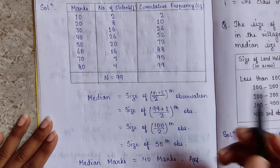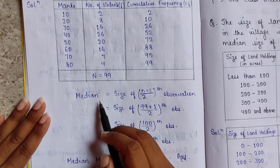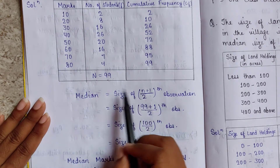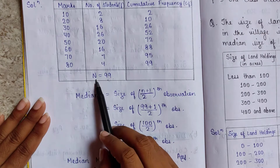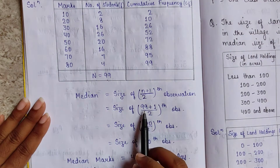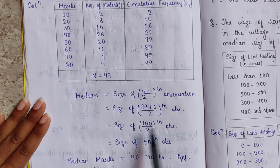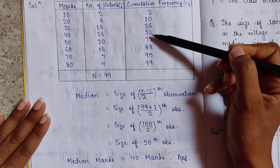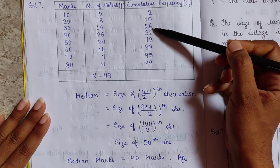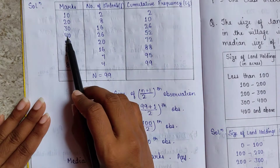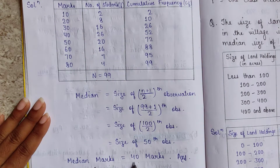By applying the formula, median equals the size of the (N+1)/2 th observation. N is equal to 99, so we get the size of the 50th observation. Looking at the cumulative frequency, 50 falls between 26 and 52. The corresponding marks are 40, so the median marks is 40.